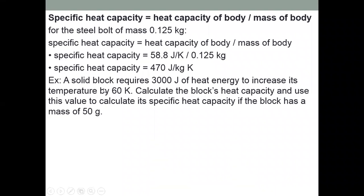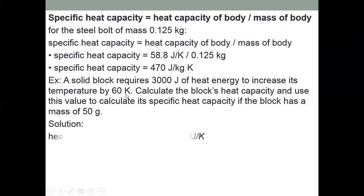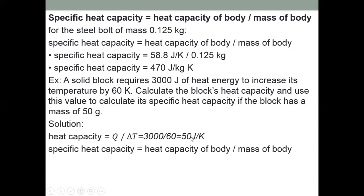Let's do another question. A solid block requires 3,000 J of heat energy to increase its temperature by 60 K. Calculate the block's heat capacity. Heat capacity = 3,000 / 60 = 50 J/K.